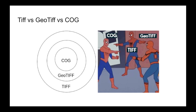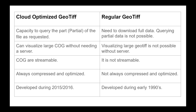So all three look the same but they are subsets: Cloud Native GeoTIFF is a subset of GeoTIFF, and GeoTIFF is a subset of TIFF. In comparing Cloud Optimized GeoTIFF with regular GeoTIFF: COG has the capacity to query part of the file as requested — we can query just our area of interest — but for regular GeoTIFF you need to download the full data; acquiring partial data is not possible.